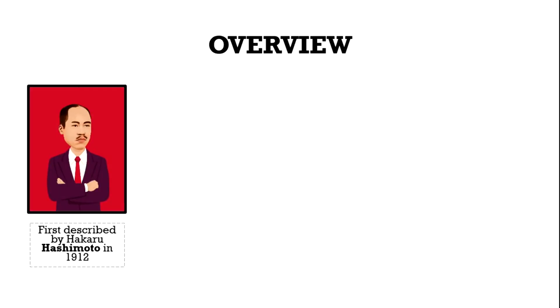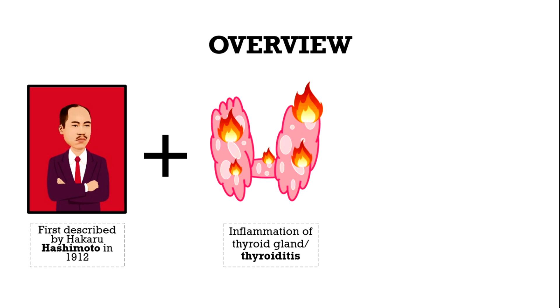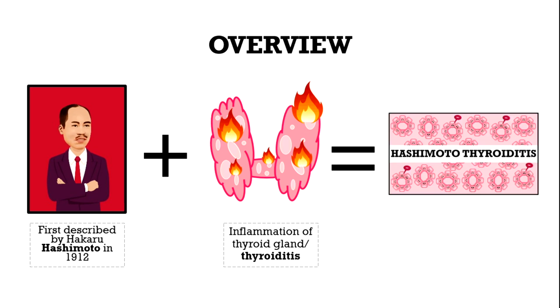Hi everyone and welcome back to MediBrain. Today's topic is Hashimoto thyroiditis, so let's dive in. Back in 1912, Hakaru Hashimoto was the first person who described an autoimmune process of the thyroid gland, leading to its inflammation and destruction, and gave the disease its name Hashimoto thyroiditis.